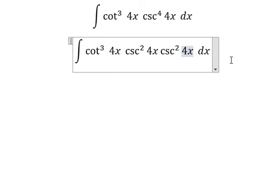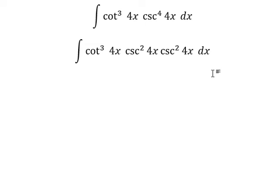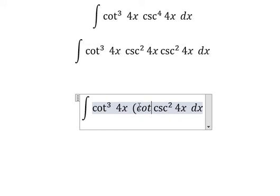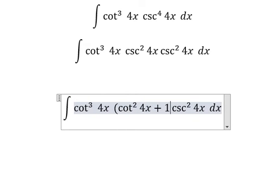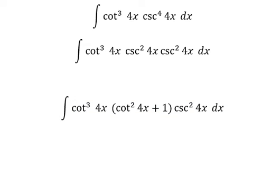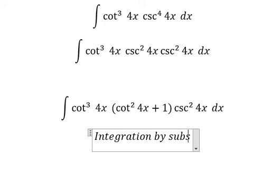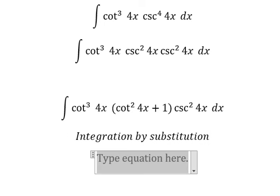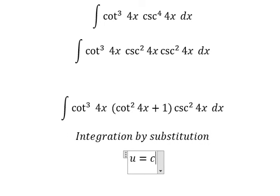Next, we can change this into cot³(4x)(cot²(4x) + 1)csc²(4x)dx using the trigonometric identity. Next, we need to use integration by substitution. I will put u equals cot(4x).